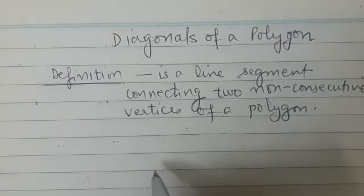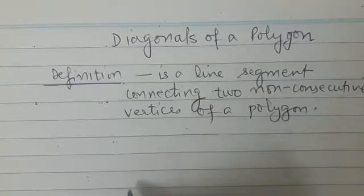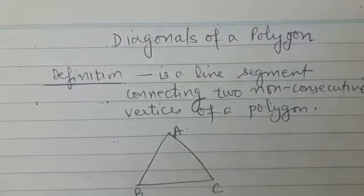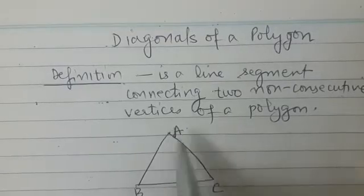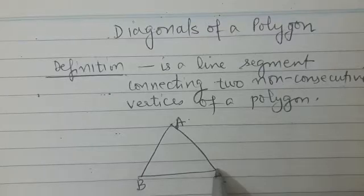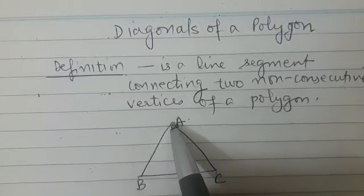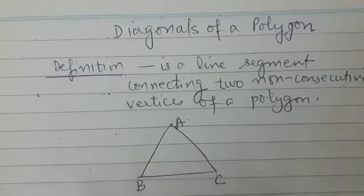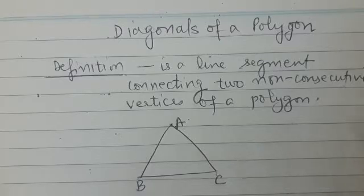For example, take triangle with vertices B, A, and C. B and C are consecutive vertices, and B and A are also consecutive vertices. So we cannot draw any diagonal in a triangle, because we are not able to get a line segment which can connect two non-consecutive vertices.